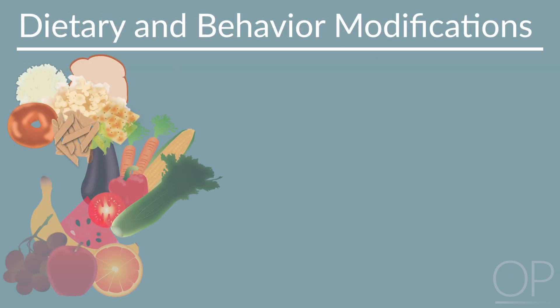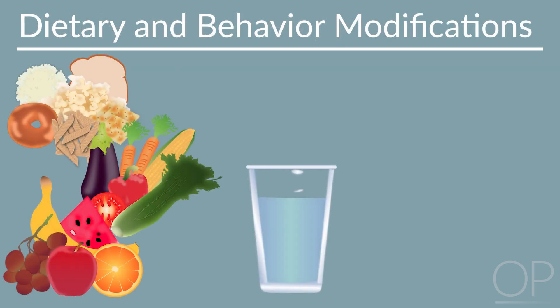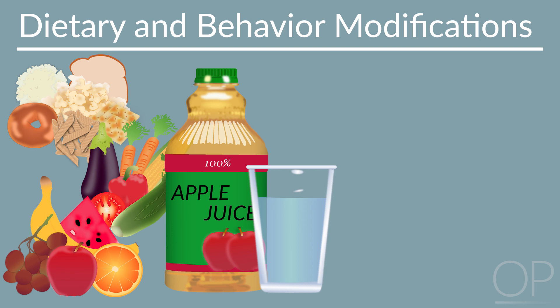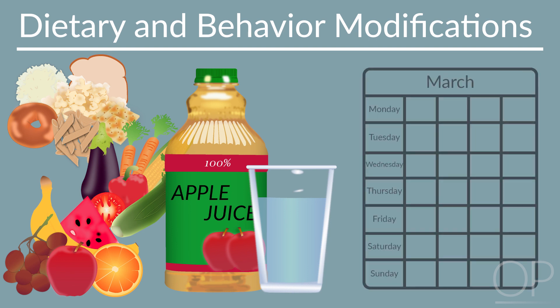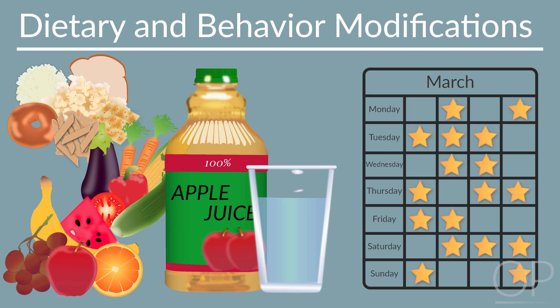A diet rich in fiber, non-dairy fluids, and some sorbitol-based juices can play a role in preventing constipation. Techniques such as documentation of bowel movements, toileting routines with proper body mechanics, and positive reinforcement are helpful behavioral support through toilet training.